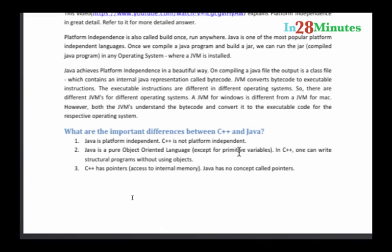And also I wouldn't be able to call Java a pure object-oriented language because there are things like variables. I can create the basic variable types like int or char which are not really objects. So I won't really be able to call it a pure object-oriented language, but it's more pure than C++. Let's put it that way.